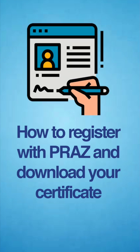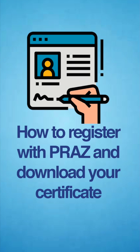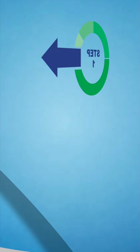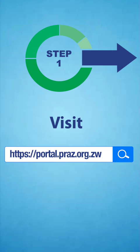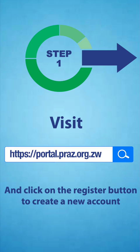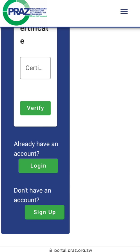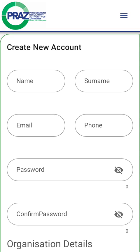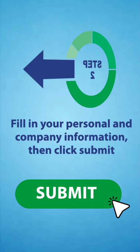How to Register with PRAZ and Download Your Certificate. Step 1: Visit portal.praz.org.zw and click on the Register button to create a new account. Step 2: Fill in your personal and company information, then click Submit.